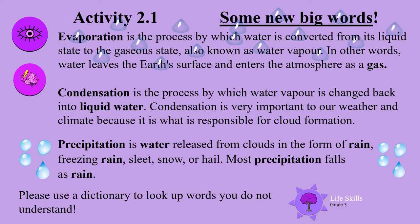Condensation is very important to our weather and climate because it is responsible for cloud formation. Precipitation is water released from clouds in the form of rain, freezing rain, sleet, snow, or hail. Most precipitation falls as rain. Please use a dictionary to look up words you do not understand.